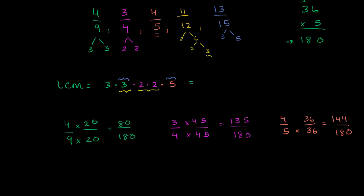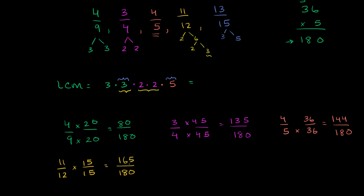Now we have 11/12. To get the denominator to be 180, we multiply 12 by 15 — because 12 times 10 is 120 and you have 60 left, so multiply by 15. We multiply 15 in the denominator and 15 in the numerator. That gives us 180 in the denominator. And 11 times 15: 10 times 15 is 150, plus one more 15 gives us 165. So 11/12 equals 165 over 180.